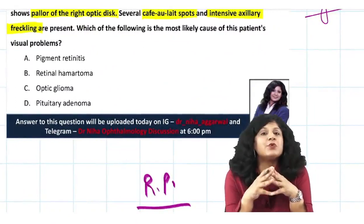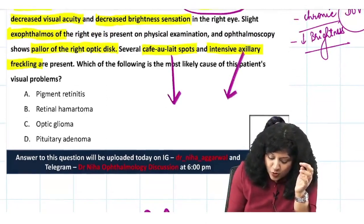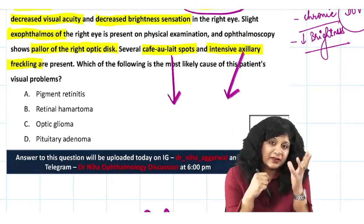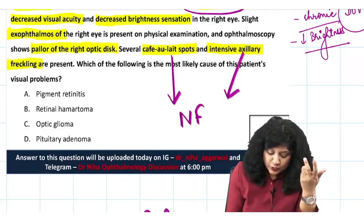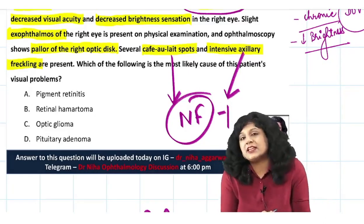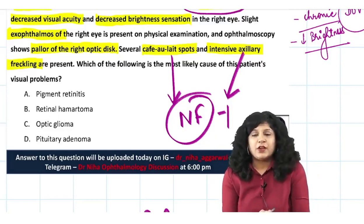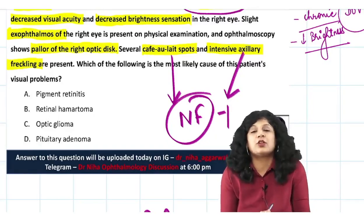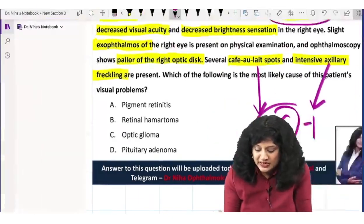Why have they given retinal hamartomas as an option? Think about where you get café-au-lait spots and intensive axillary freckling. This is very important — this points to neurofibromatosis, especially neurofibromatosis type 1 (NF1). This is a neurocutaneous syndrome which leads to café-au-lait spots and axillary freckling.